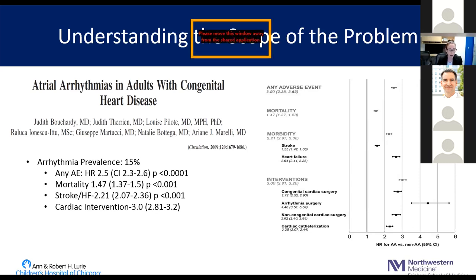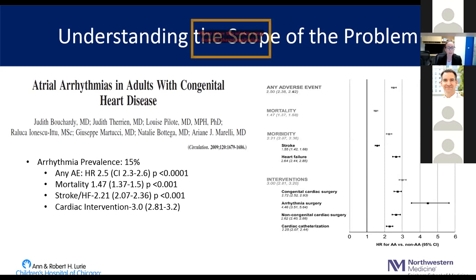What was most concerning about this study was the hazard ratio of any adverse events in those patients with atrial arrhythmias compared to those without was 2.5. There was a near 50% increase in mortality, more than double the risk of morbidity — specifically stroke and heart failure — and three times the risk of cardiac interventions. So if approximately 15% of adults with congenital heart disease have atrial arrhythmias and that risk increases steadily with age, you arrive at this idea of young patients with aged hearts.